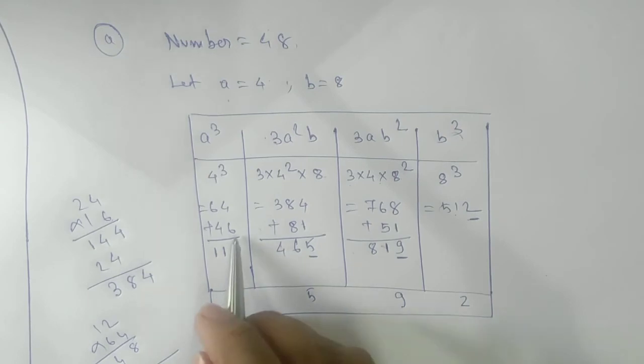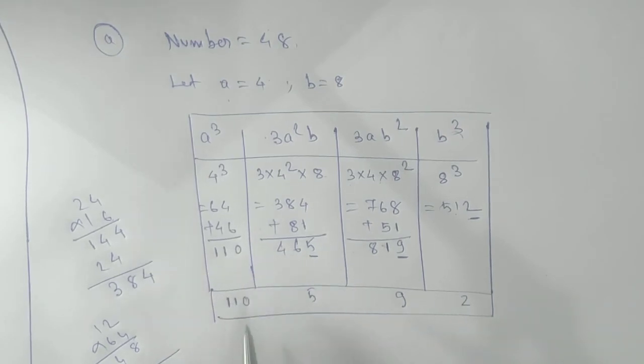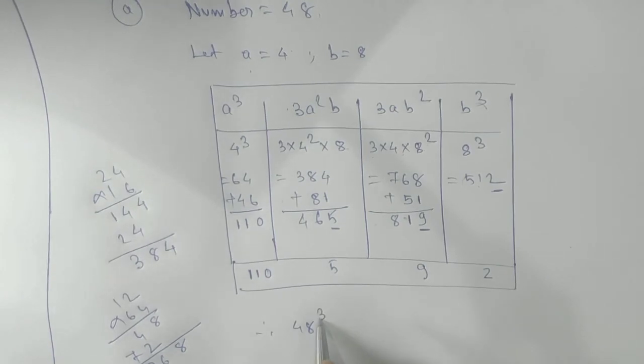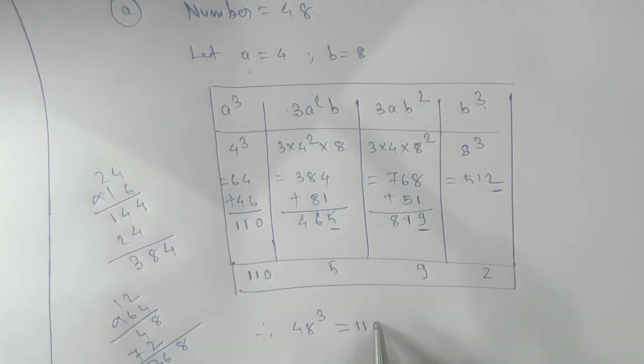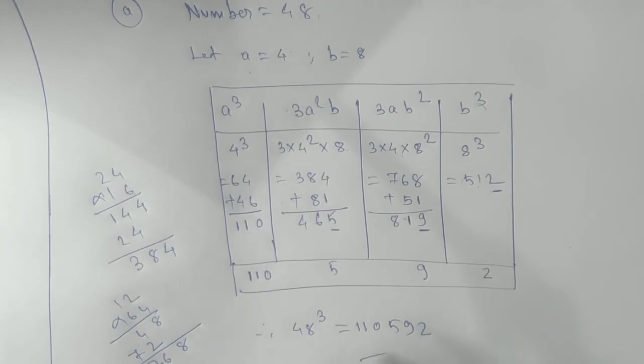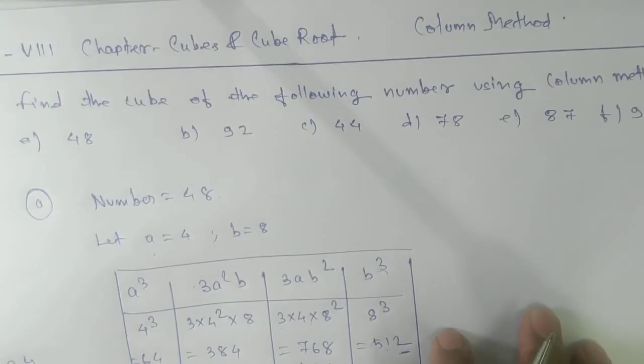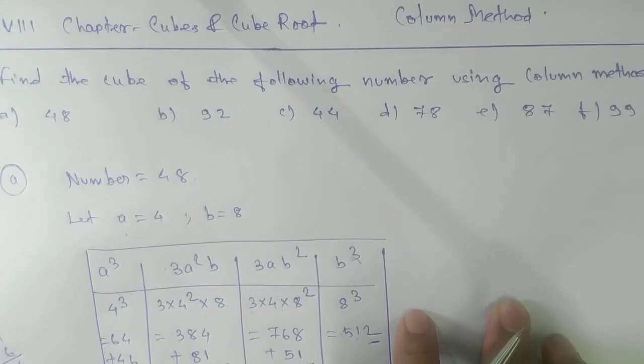Now you add it. Whatever we are getting, we'll take the whole thing here. So we are getting here 110,592. Therefore, 48³ equals 110,592. This is your answer. I hope you have understood. The rest is your homework. Try by yourself. Thank you.